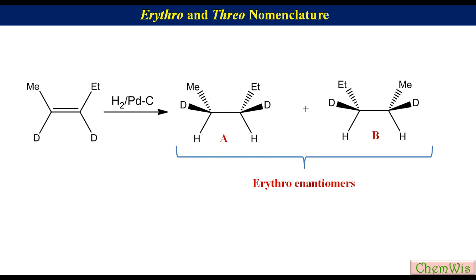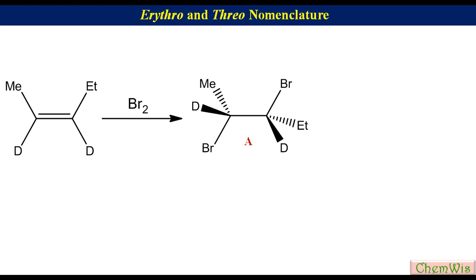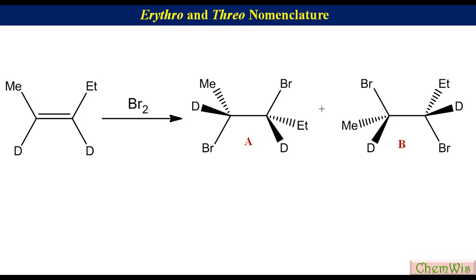Let's take the example of bromination of the same alkene. Bromination of an alkene is an example of anti addition, meaning bromine atoms attack from the two opposite faces of the alkene. If attack occurs from one face it gives product A; from the other face it gives product B. A and B are in staggered conformation with the same lateral deuterium atoms on the same side, so these are erythro isomers. Rotating structure B 180 degrees in the plane shows that A and B are enantiomers — erythro enantiomers.